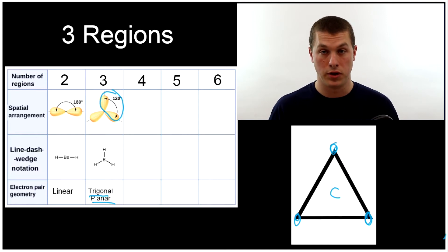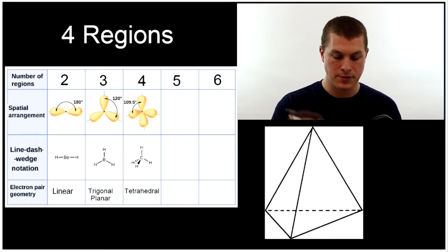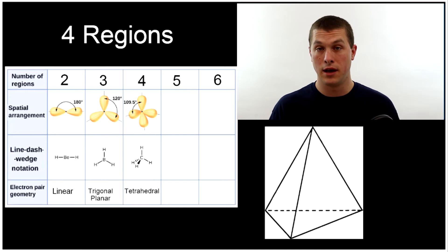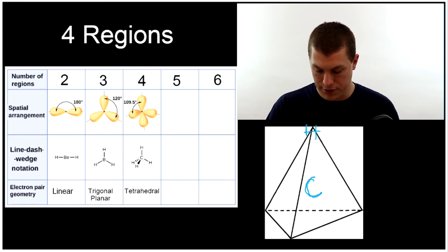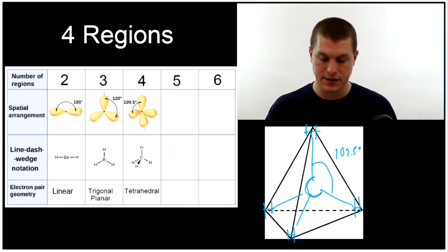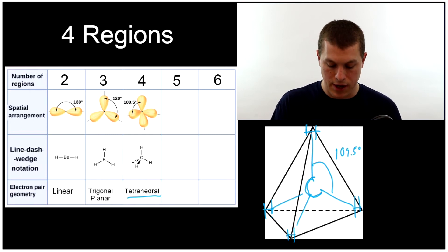What about when you've got four regions? Now we start to get more interesting shapes. Four regions is exactly like our methane that we showed at the beginning. In the center of the shape we'll draw a carbon and then at each vertex we have a hydrogen. It turns out that if you actually go measure what those bonds are, it gives you 109.5 degrees. That's the sort of random bond angle that you'll see, always there for molecules with four regions of electron density. We call that tetrahedral.